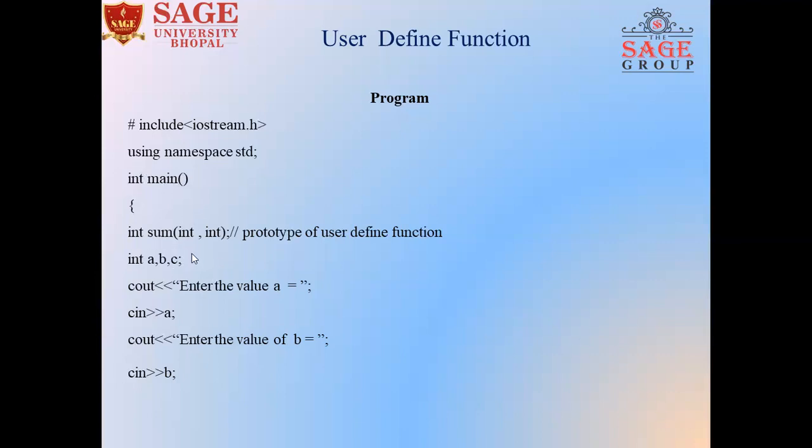So first of all, open the body of main function. We will create a prototype of the user-defined function. The user-defined function name is sum and return type is integer. We will pass two parameters - the parameters are integer and integer. So we will declare the user-defined function prototype by this statement.